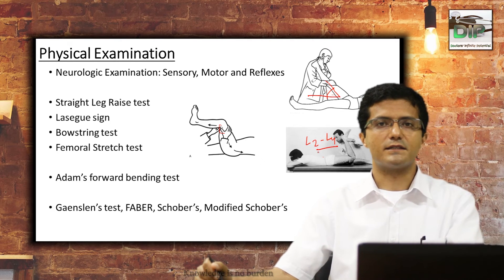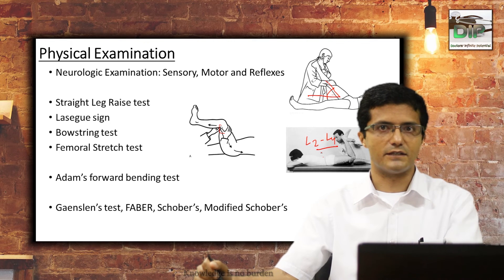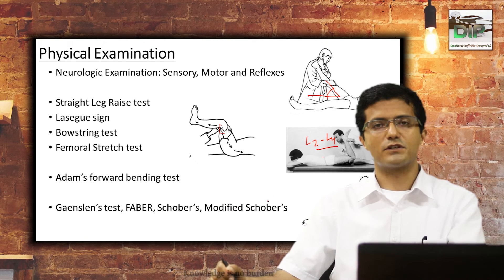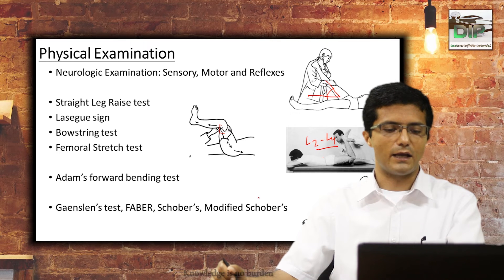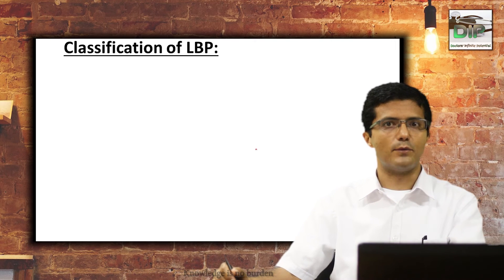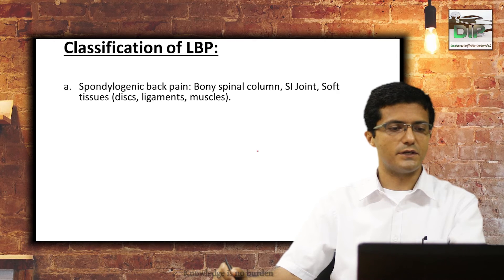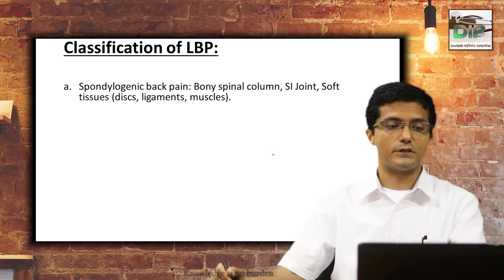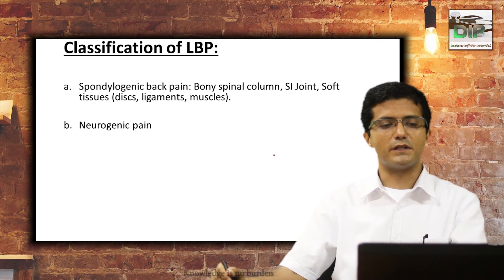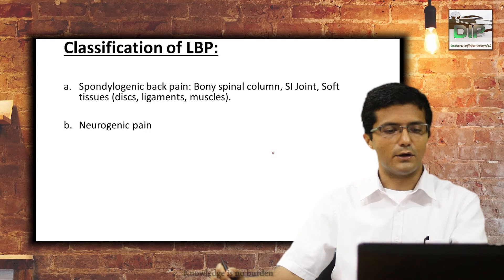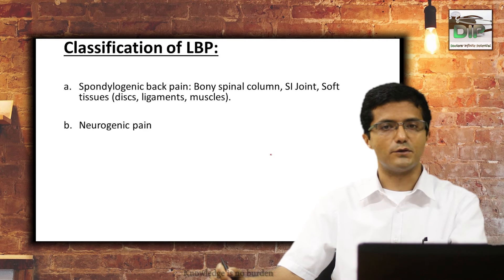The Adams forward bending test is done for scoliosis, especially in children. Gaenslen's test, FABER test, and Schober's or modified Schober's test are commonly done for inflammatory pathologies affecting the spine such as ankylosing spondylitis. After detailed clinical evaluation, we classify the low back pain into categories: spondylogenic back pain — involving the bony spinal column, sacroiliac joints, or soft tissues like disc, ligaments, and muscles — or neurogenic pain originating from cord or brain-level problems like cauda equina syndrome, or transverse myelitis, which usually presents with significant back pain.